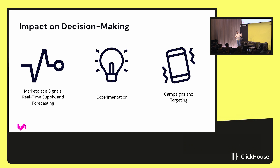How has this helped with decision-making? The primary customers leveraging real-time ingestion are our experimentation, campaigns, targeting, signaling, and forecasting teams. If you're running experiments, you want to quickly see what happened — so there are a bunch of events being streamed through Kinesis or Kafka that are being used for signaling and better data-driven decision-making for our customers.